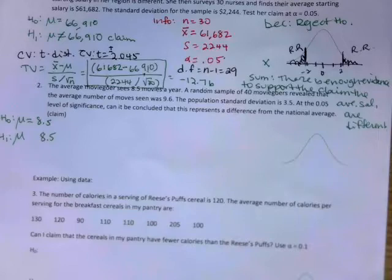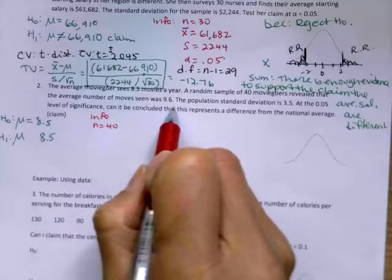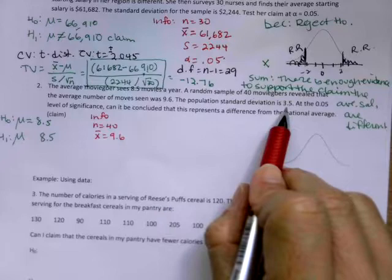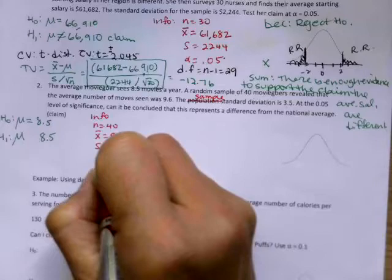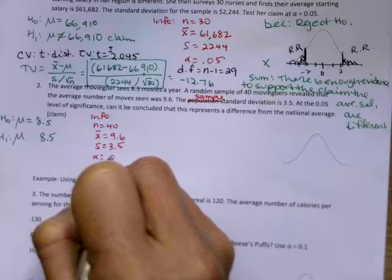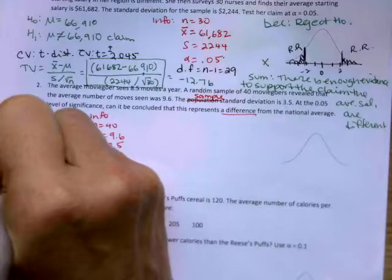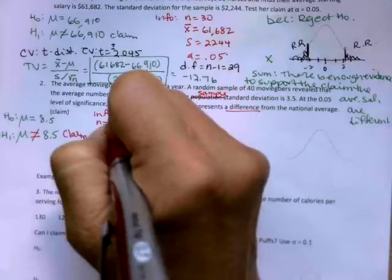A random sample of 40. Okay, so now they're starting to give us the info. So let's go ahead and write the info down. Random sample of 40, so that's N. Reveal the average number was 9.6. So that's from that sample of 40. So X bar is 9.6. The population standard deviation. Oh, this is sneaky. So I'm going to say I'm fixing it on the fly. The sample standard deviation. So S is 3.5. At the alpha is 0.05 level of significance. Can it be concluded this represents a difference? Okay, there's that difference again. Now that's giving us a clue for the alternative. So I'm going to put a not equal to. And then that will also be our claim.